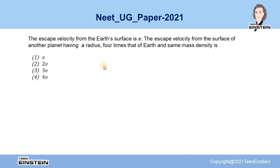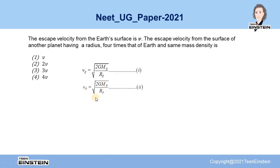To solve this problem, you have to first write down the general expression for the escape velocity. Equation 1 gives the expression for the escape velocity from the Earth's surface. Similarly, we can write down the escape velocity expression from the surface of that planet, where G is the universal gravitational constant, ME is the mass of the Earth, RE is the radius of the Earth in equation 1, and MP is the mass of the planet and RP is the radius of the planet in equation 2.